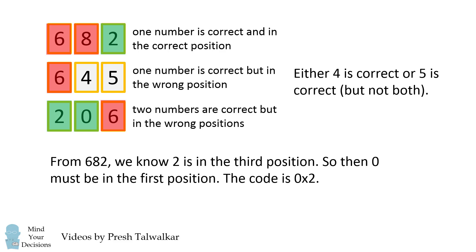From 682, we know that 2 is in the third position, and since 0 is in the wrong position in 206, that means 0 must actually be correct in the first position. So, the code has to look something like 0, blank, 2.